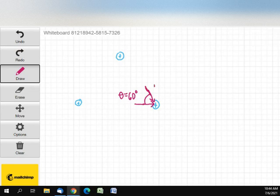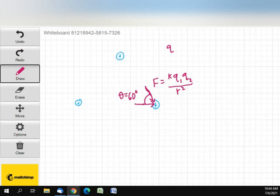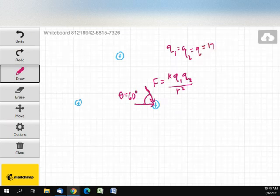Each of these forces is K, Q1, Q2, over R squared. Now, we're told that Q1 equals Q2, which equals, I'm going to call it Q, which is 17 microcoulombs.